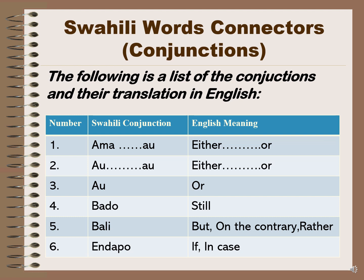Number one: 'ama -- au' which means 'either -- or' in English. Number two: 'au -- au' which can also be translated as 'either -- or'. Number three: 'au' meaning 'or'. Number four: 'bado' means 'still'. Number five: 'bali' means 'but', 'on the contrary', or 'rather'. Number six: 'endapo' meaning 'if' or 'in case'.